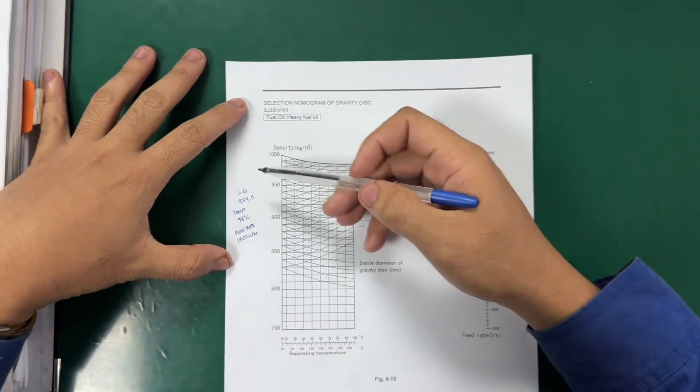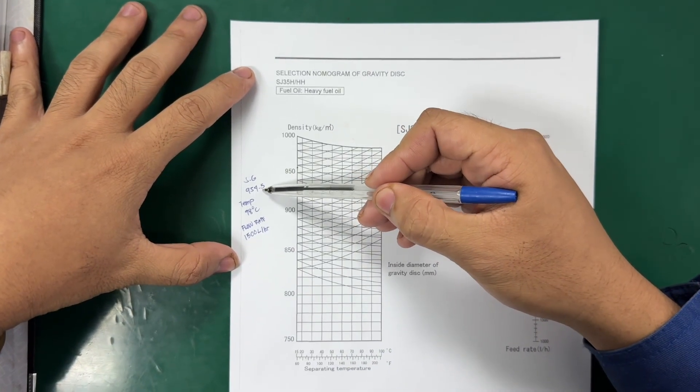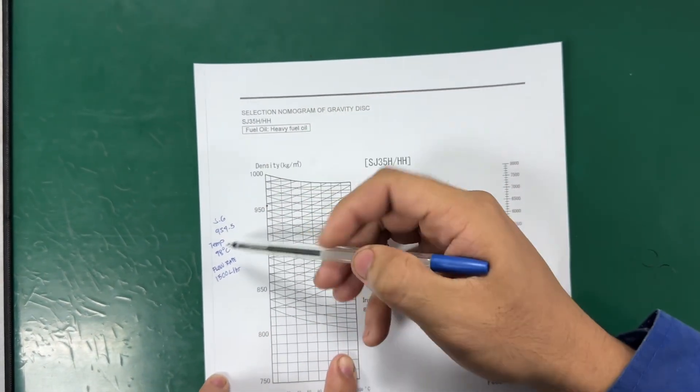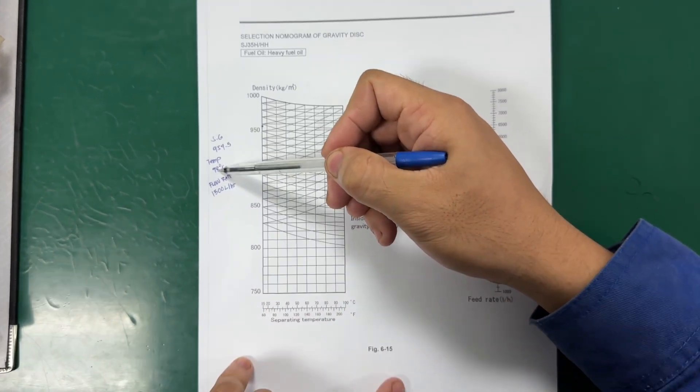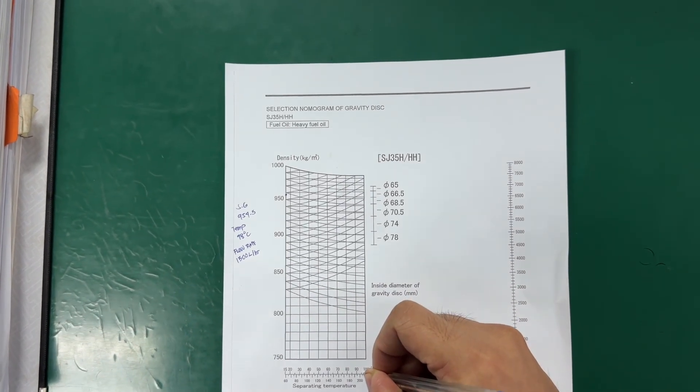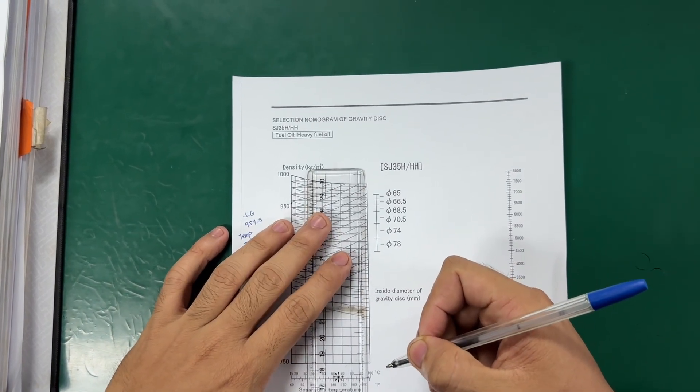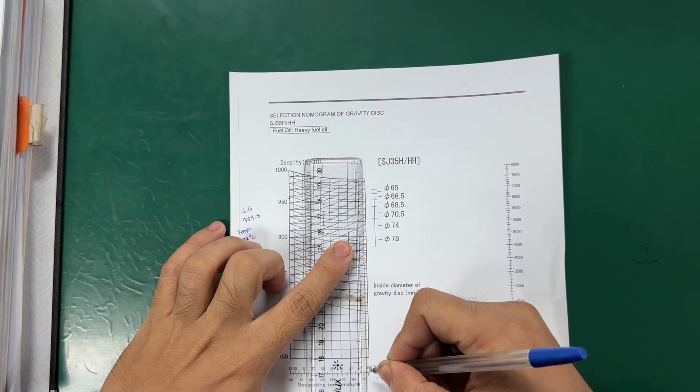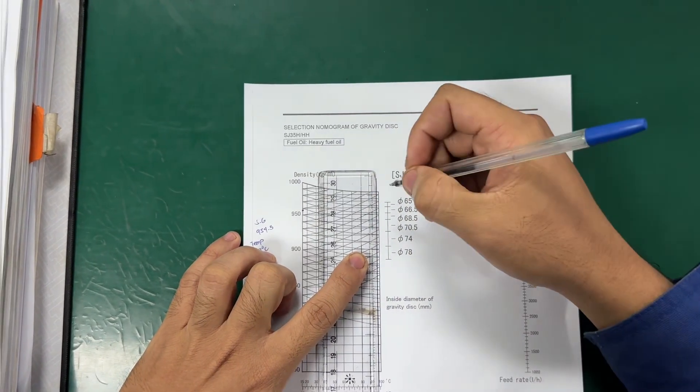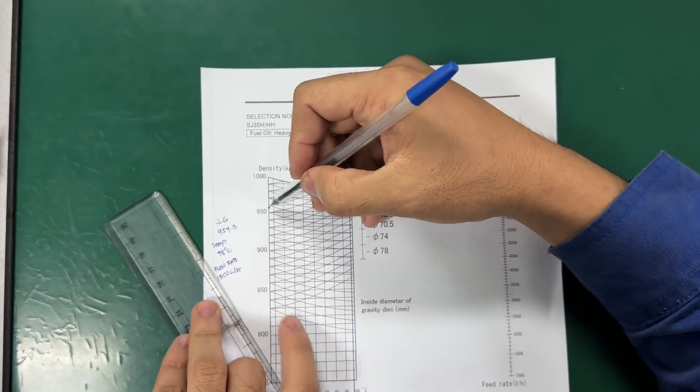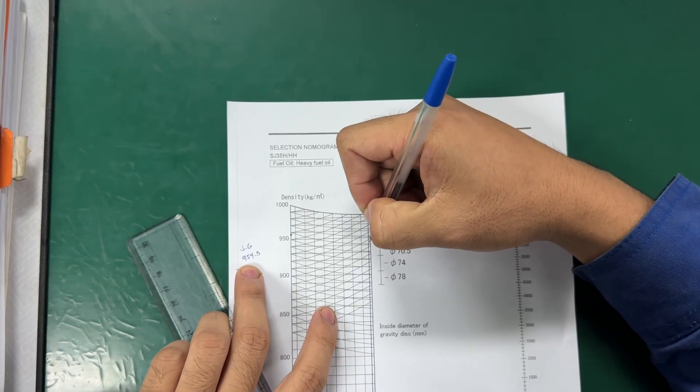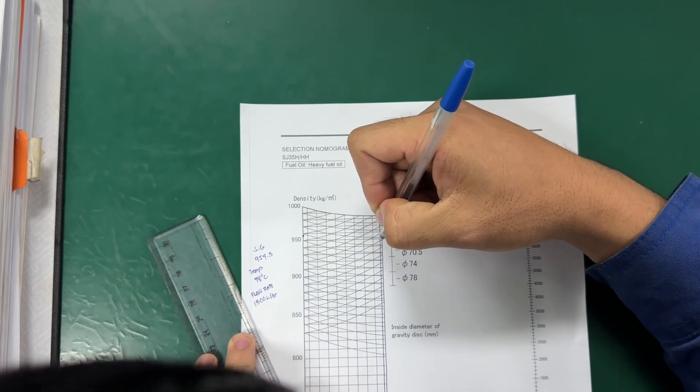First, locate the specific gravity, 954.5. So, here. Second is the temperature, 98 degrees. Here, 95, here. And we will draw a vertical line. Then, the specific gravity, draw a curved line until they intersect the 98 temperature.